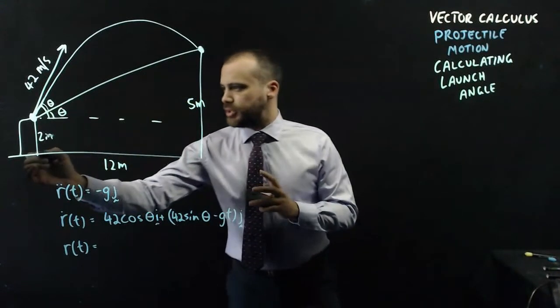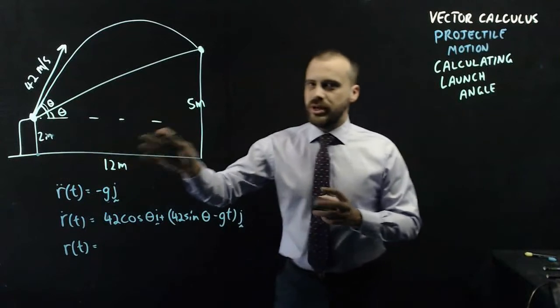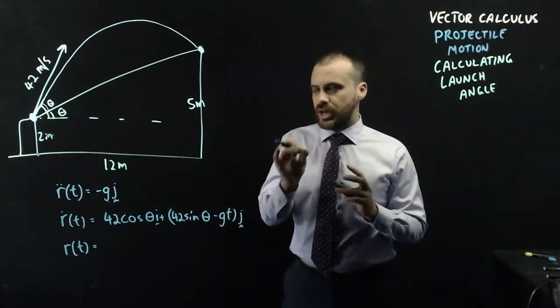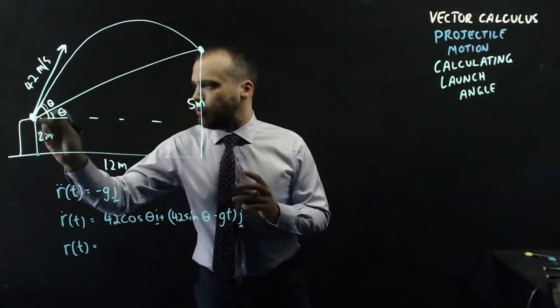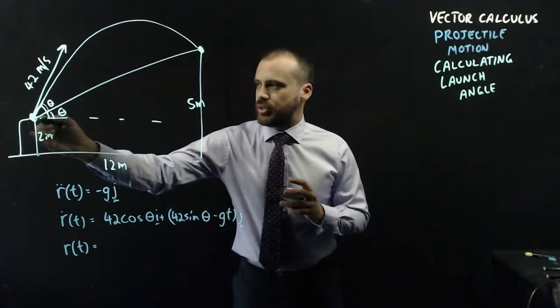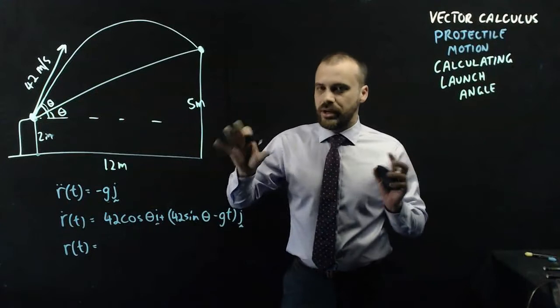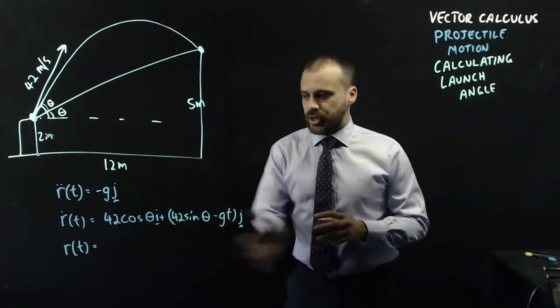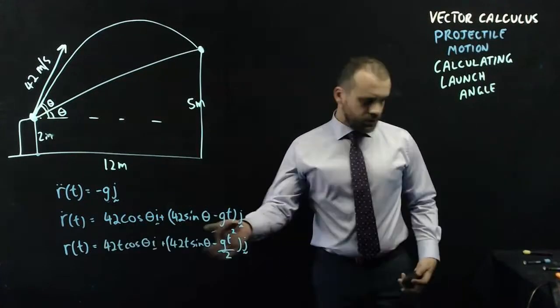Because my displacement function is going to change depending on where I think my origin is. And some people might consider this to be their origin, but that's just going to lead us to a bunch of problems. Wherever possible, I'm going to create my origin where my projectile is. So that's going to be my 0, 0. That means that its initial displacement is 0, 0, which means that I don't have to think too much about creating this displacement function.